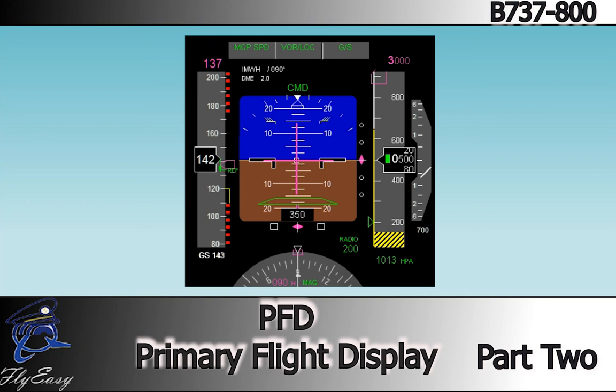The radio altitude, selected radio altitude minimums, and rising runway are now in view. Notice the speed tape shows deceleration to a target speed of 137 knots, and also a ref value is displayed on the tape. Notice the landing altitude reference bar is in view.